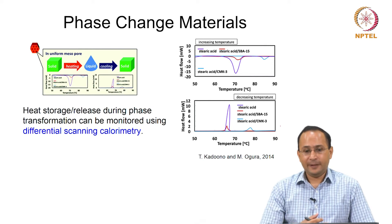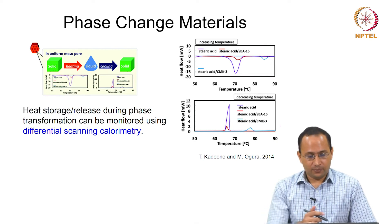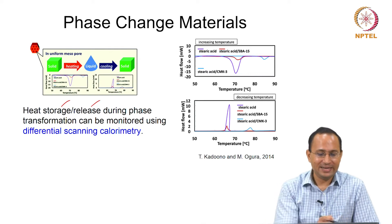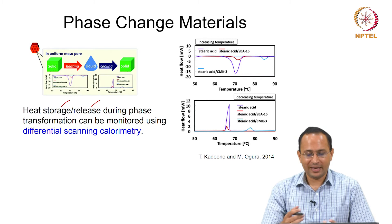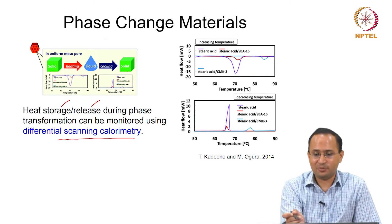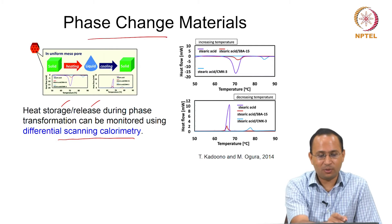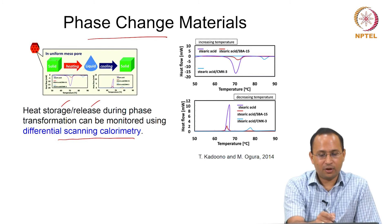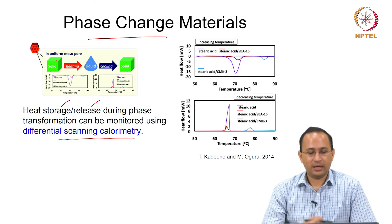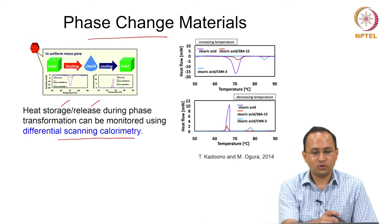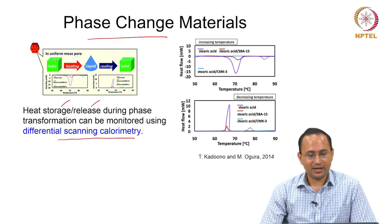We can also quantify how much heat is absorbed and how much heat is released. Heat storage and release during phase transformation can be captured using differential scanning calorimetry. Phase change materials undergo a solid-to-liquid transition upon heating, absorbing a lot of heat. Upon cooling, they transform back to solid and release heat. These changes can be captured using differential scanning calorimetry.